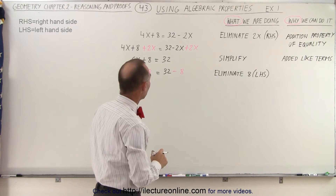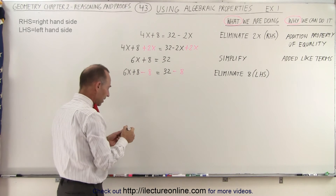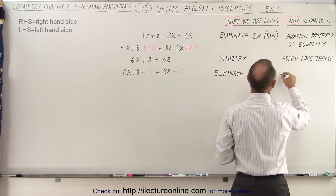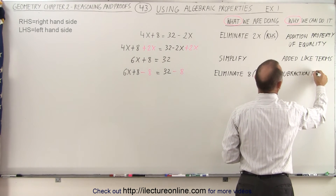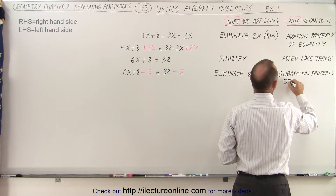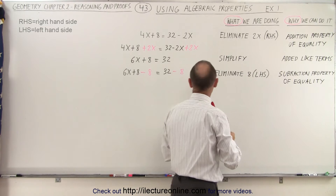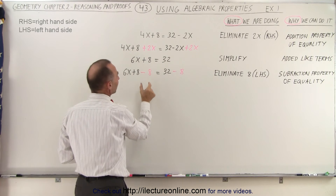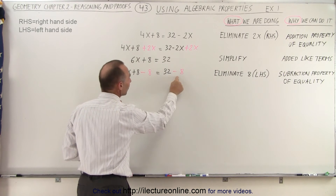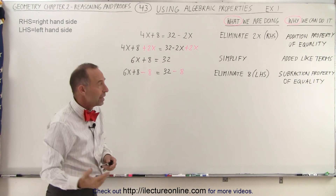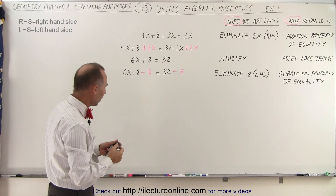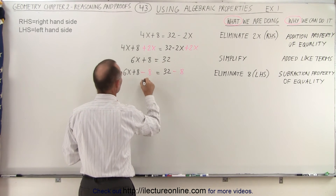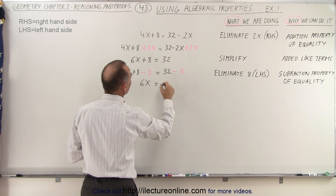Why can I do that? The justification is the subtraction property of equality. Since I started out with an equation that was valid — the left side equaled the right side — I'm allowed to subtract the exact same quantity from both sides, and the two sides will still be equal. So 8 minus 8 is 0, and I end up with 6x equals 32 minus 8, which is 24.